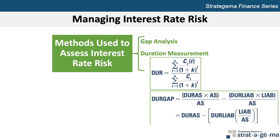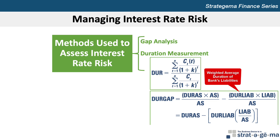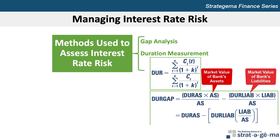The bank can then estimate its duration gap, which is commonly measured as the difference between the weighted duration of the bank's assets and weighted duration of its liabilities, adjusted for the firm's asset size, where DURAS is the weighted average duration of the bank's assets, DURLIAB is the weighted average duration of the bank's liabilities, and AS and LIAB represent the market values of the bank's assets and liabilities respectively.